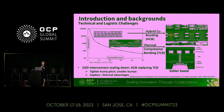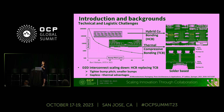The interconnects that connect die to die keep scaling down because we want denser and smaller interconnects to improve device performance. Once the bump pitch scales down to less than 20 microns, solder-based thermal compressive bonding will be replaced by copper pad-based hybrid bonding because of defects. Hybrid copper bonding provides tighter bump pitch, smaller bumps, and because it's gapless with no underfill, it has lots of thermal advantages.